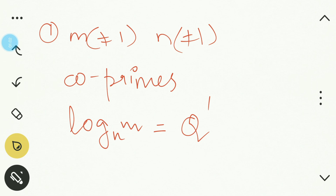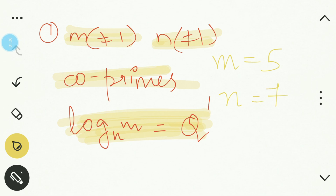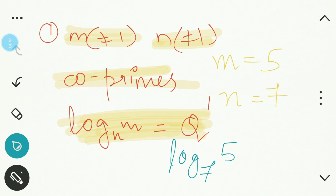First: if m is not equal to 1 and n is also not equal to 1, and they are co-primes, then log m to the base n is going to be an irrational number. For example, if m is 5 and n is 7 — these two are co-primes — then log 5 to the base 7 is simply an irrational number. Remember this first rule.